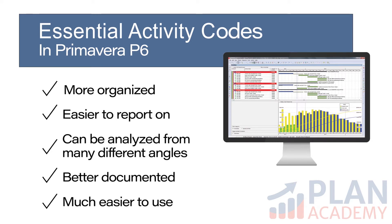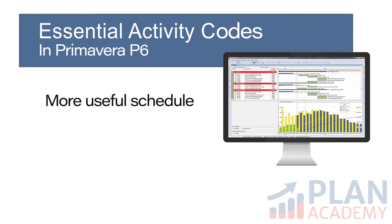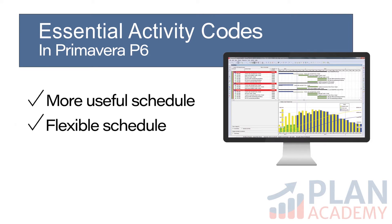Activity Codes in Primavera P6 are completely optional in the course of building a schedule. There's no need to add Activity Codes to a schedule. But if you do, they'll greatly enhance the usefulness and flexibility of your schedule. As you can tell, I'm a fan of P6's Activity Codes — they are one of the most useful and essential features of Primavera P6.